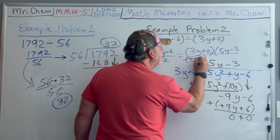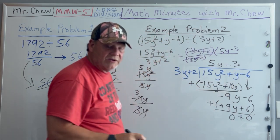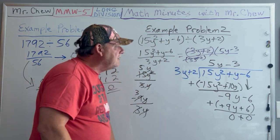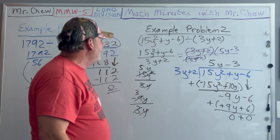Then we have that over 3y + 2. Look what happens: this cancels and I get 5y - 3. That is your first example of division.